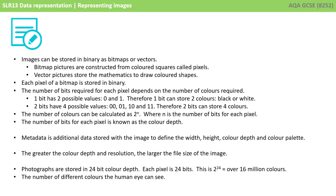Two bits have four possible values: 00, 01, 10 and 11, therefore two bits can store four colours. The number of colours can be calculated as 2 to the n, where n is the number of bits for each pixel. The number of bits for each pixel is known as the colour depth.